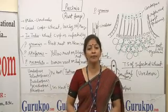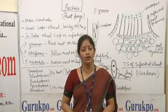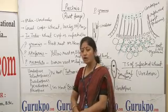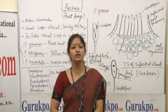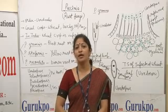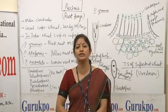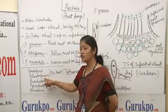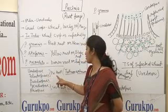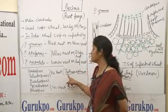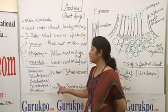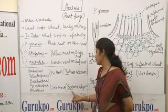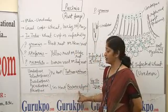It is an obligate parasite. It means it requires two alternative hosts for its survival. Now we will discuss one species of Paxinia, that is Paxinia graminis. Paxinia graminis causes black rust disease on wheat. It produces five types of spores. The first two spores, uredospores and teliospores, are formed on the primary host, that is wheat, Triticum aestivum. And the other spores, pycniospores and aeciospores, are developed on the secondary host, that is Berberis vulgaris.